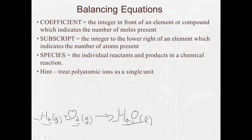A hint when we're balancing equations, and as we get into some examples I'll show you these. You're going to treat polyatomic ions as a single unit. So when we're balancing out the different elements in the equation, if you see the same polyatomic ion on the left and on the right, then you can treat it as if it's one unit.